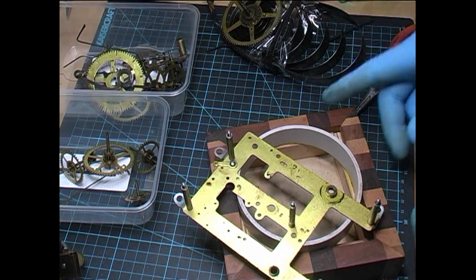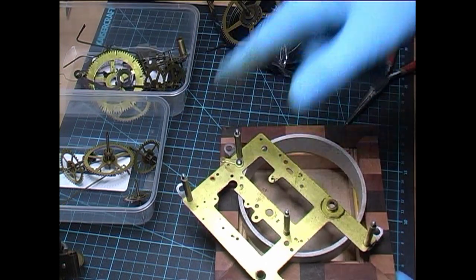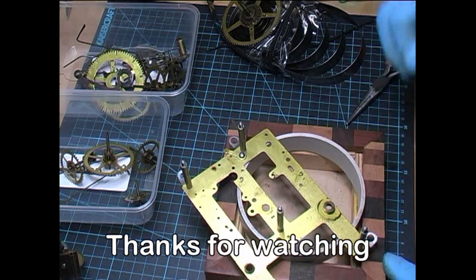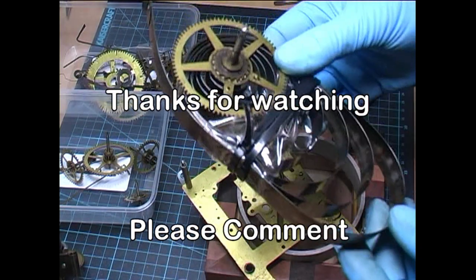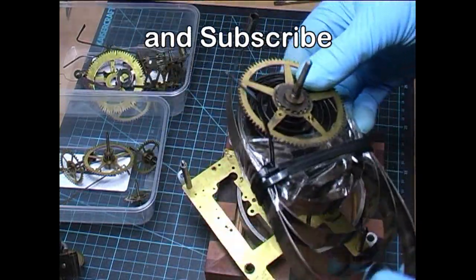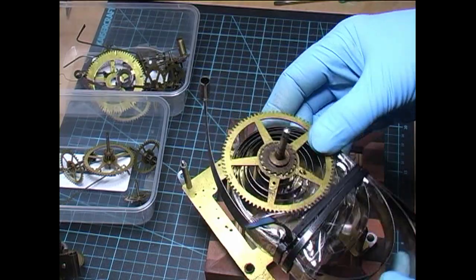Now we'll undo the springs and clean them and grease them so that we can then put all the brass parts, the wheels, etc., into the ultrasonic and clean them.